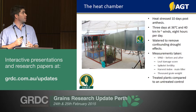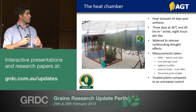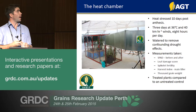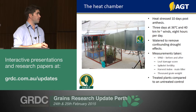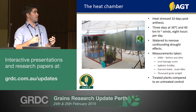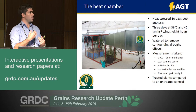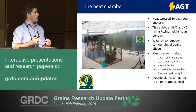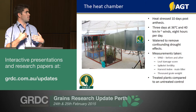This photo shows the contraption we use to screen wheat lines for heat stress under controlled conditions. We plan our experiments, monitor each plant independently, and 10 days after anthesis, we put the plants into the heat chamber for three consecutive days at 36 degrees with 40 km per hour winds for eight hours each day — quite a significant stress. It's replicating, at least in South Australia, the cycles of hot north wind days that build up to mid-30s or even 40 degrees, then crash back down to low to mid-20s the following day. The plants are also watered to avoid confounding heat effects.